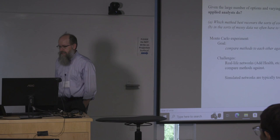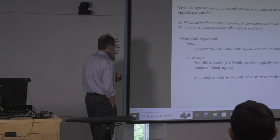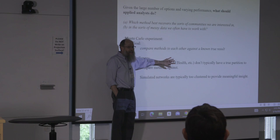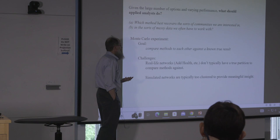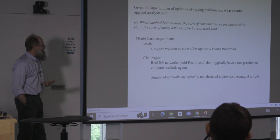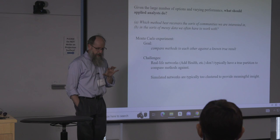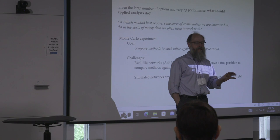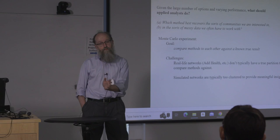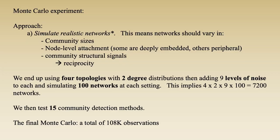We'd like a principled or at least practical way to distinguish between solutions. What we do — like with missing data — is simulate data and figure out which solution works. The challenge is that unlike missing data, if I use real-life networks I don't know the true groups. So our plan is to feed algorithms networks where we really know the truth but haven't made it so obvious any algorithm wins — we can scale between obvious and conflated solutions while knowing the truth.